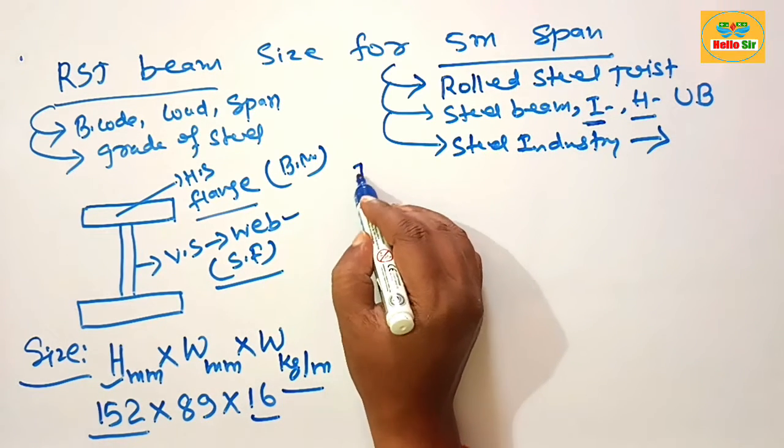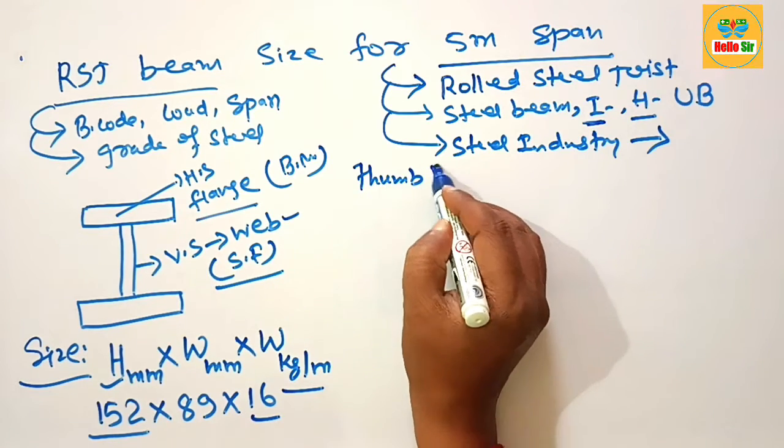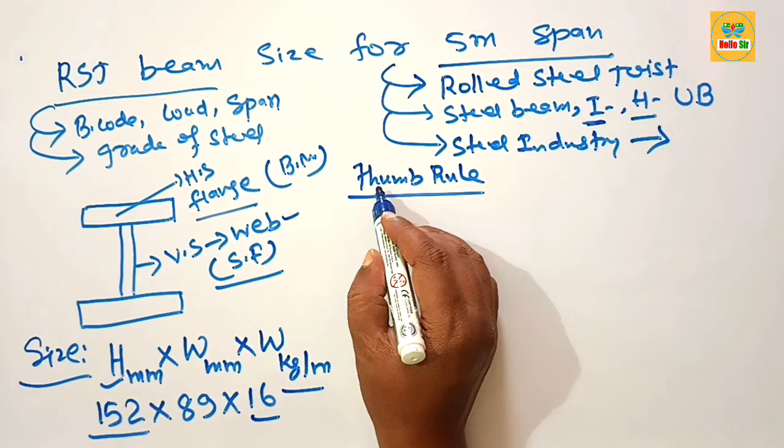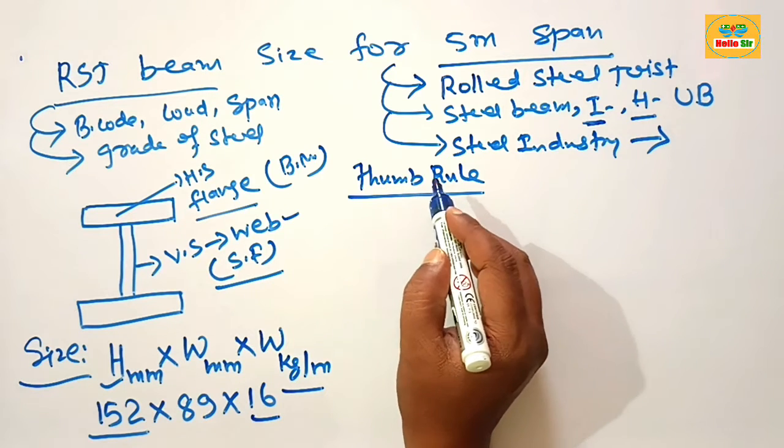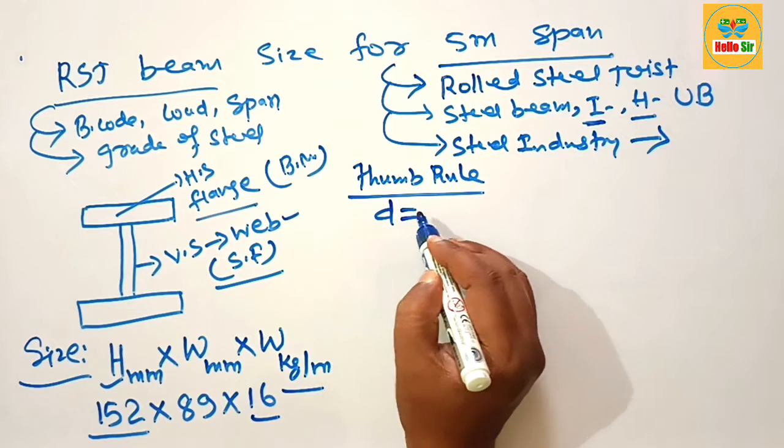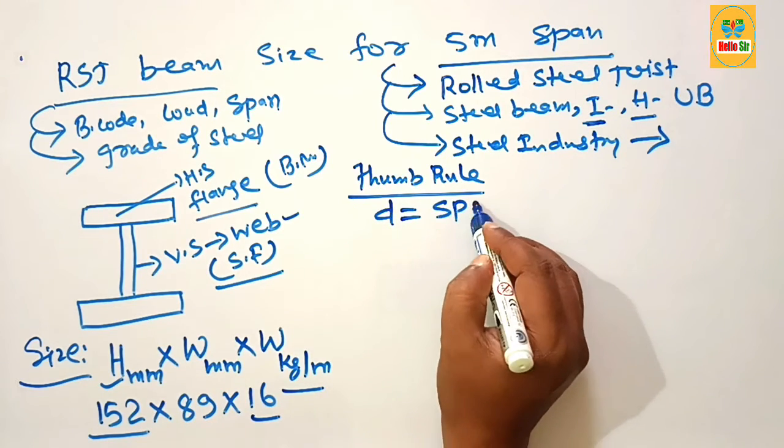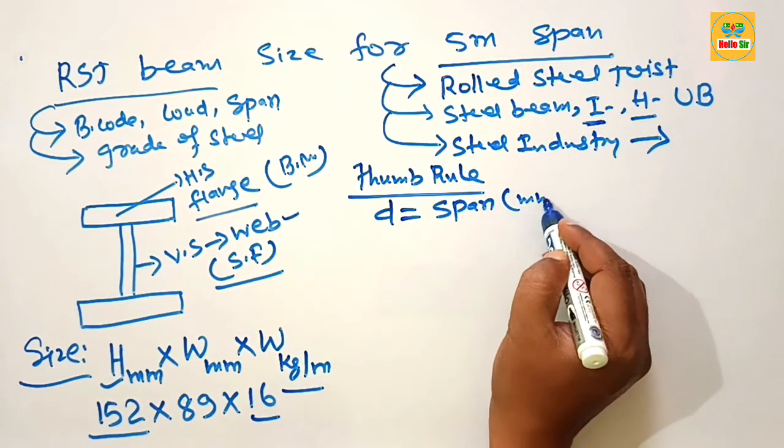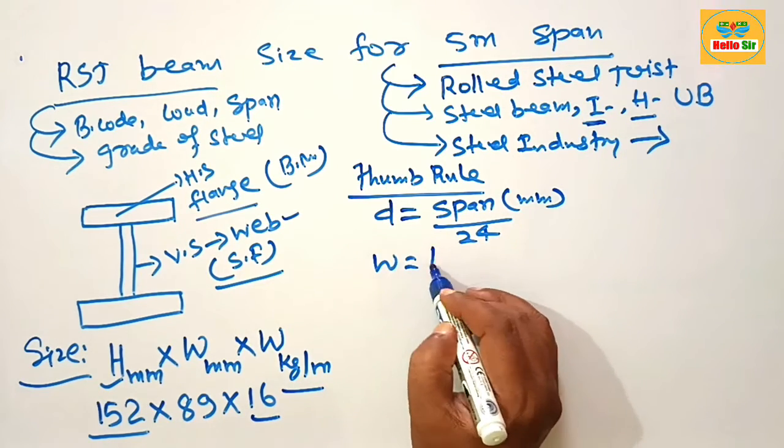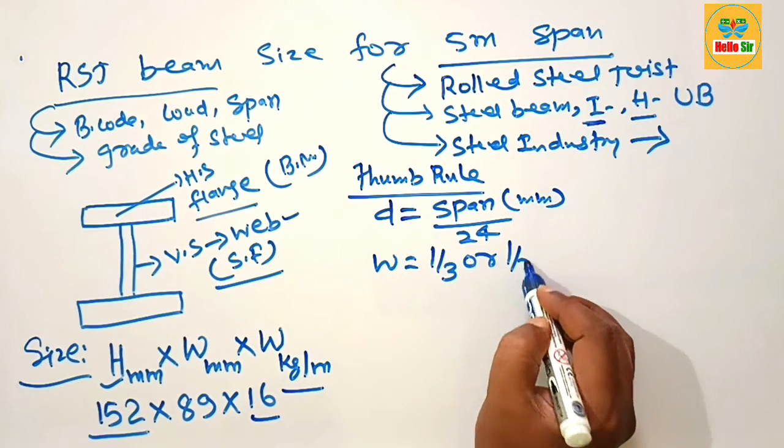What are the thumb rule for sizing of RSJ beam? The sizing of RSJ beam means you have to decide the depth and width section of the beam. The depth section of the beam: divide your span in mm by 24 and width section of the beam is one third or one half of the depth section of the beam.